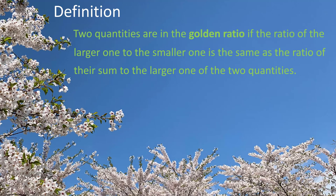Definition: Two quantities are in the golden ratio if the ratio of the larger one to the smaller one is the same as the ratio of their sum to the larger one of the two quantities.